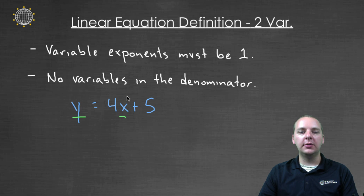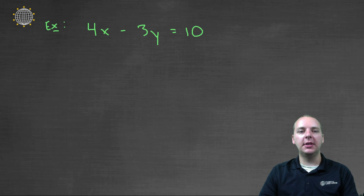If it had been y equals four x squared plus five, that's non-linear. That's not a linear equation. Alright, let's run through a couple examples real quick.